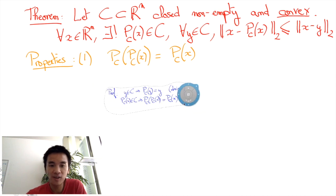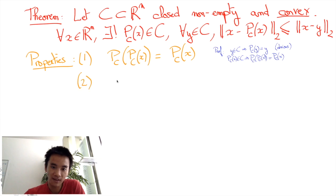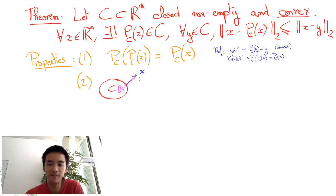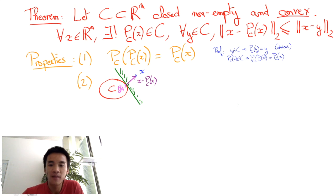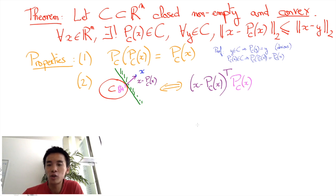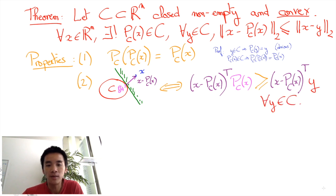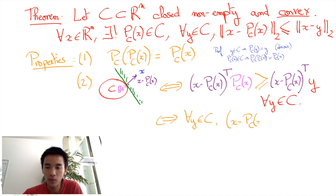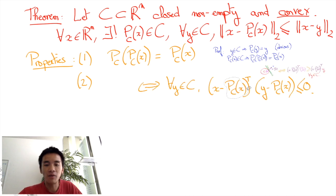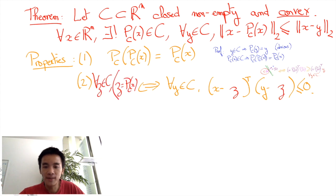Another nice property, which is definitely the fundamental property of this projection, is the fact that all the other points of C are on the same side of the hyperplane defined by the normal direction X minus PC of X. In algebraic terms, this corresponds to saying that X minus PC of X transpose PC of X is greater or equal to X minus PC of X transpose Y for all points Y in the convex set C. This inequality is usually rewritten as X minus PC of X transpose Y minus PC of X is at most 0. And in fact, PC of X is the only point in C with this property.